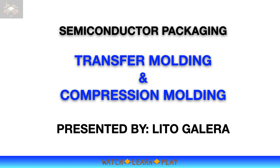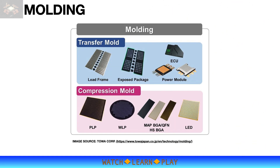After the interconnect process, the device would need to be encapsulated. This video will discuss the two molding processes used in the semiconductor packaging industry. Semiconductor devices are bare and can be damaged in an instant if not encapsulated properly. Transfer molding and compression molding are the two molding processes covered here. Transfer molding is widely used for lead frame based packages such as plastic dual inline package.